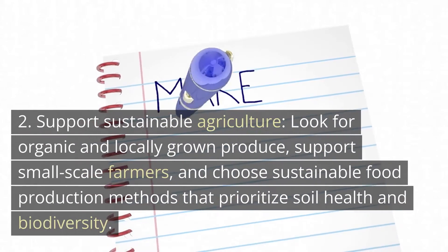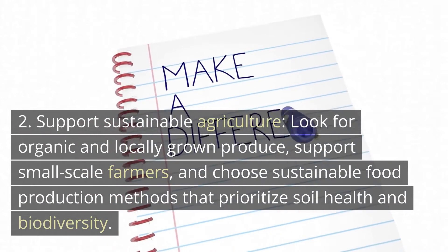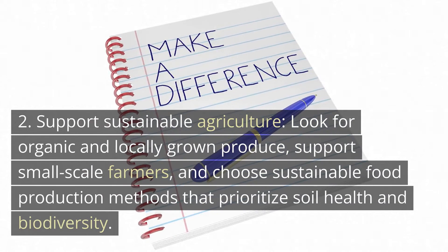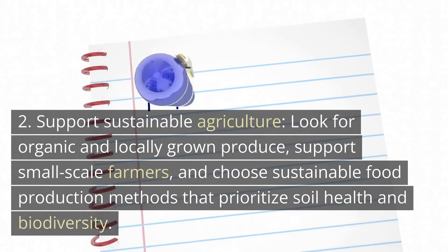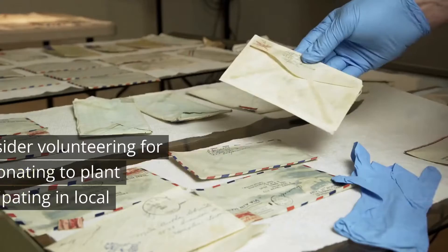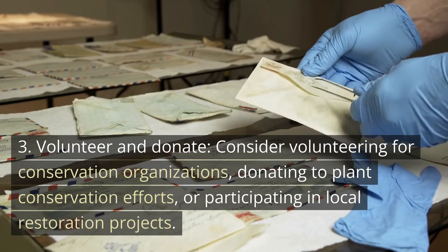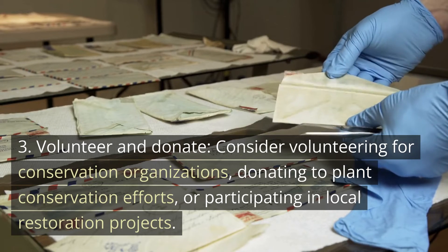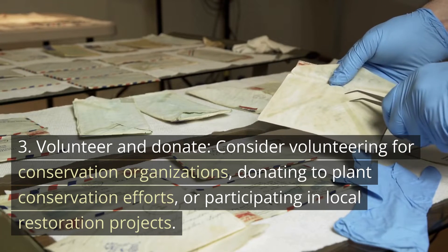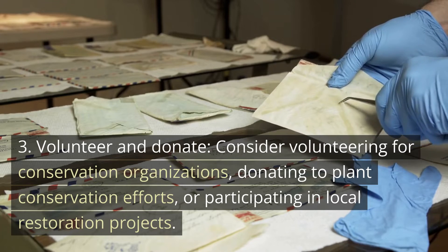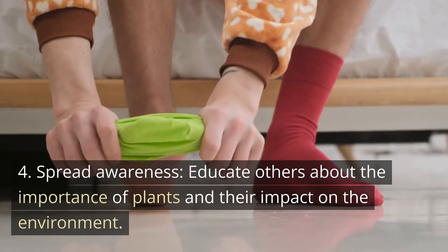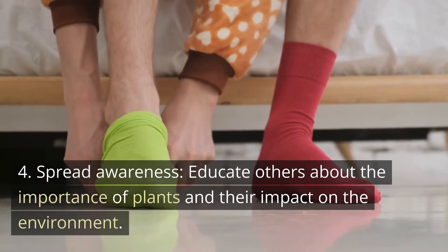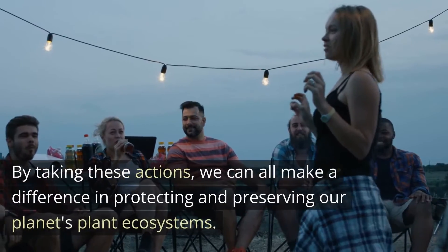Second, support sustainable agriculture — look for organic and locally grown produce, support small-scale farmers, and choose sustainable food production methods that prioritize soil health and biodiversity. Third, volunteer and donate — consider volunteering for conservation organizations, donating to plant conservation efforts, or participating in local restoration projects. Fourth, spread awareness by educating others about the importance of plants and their impact on the environment.